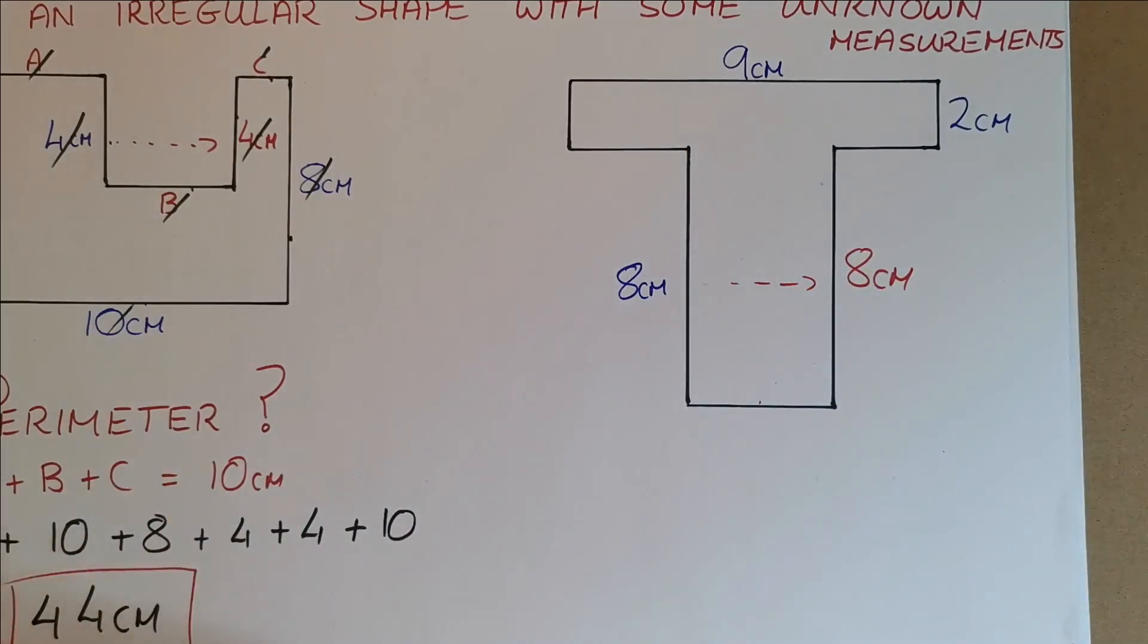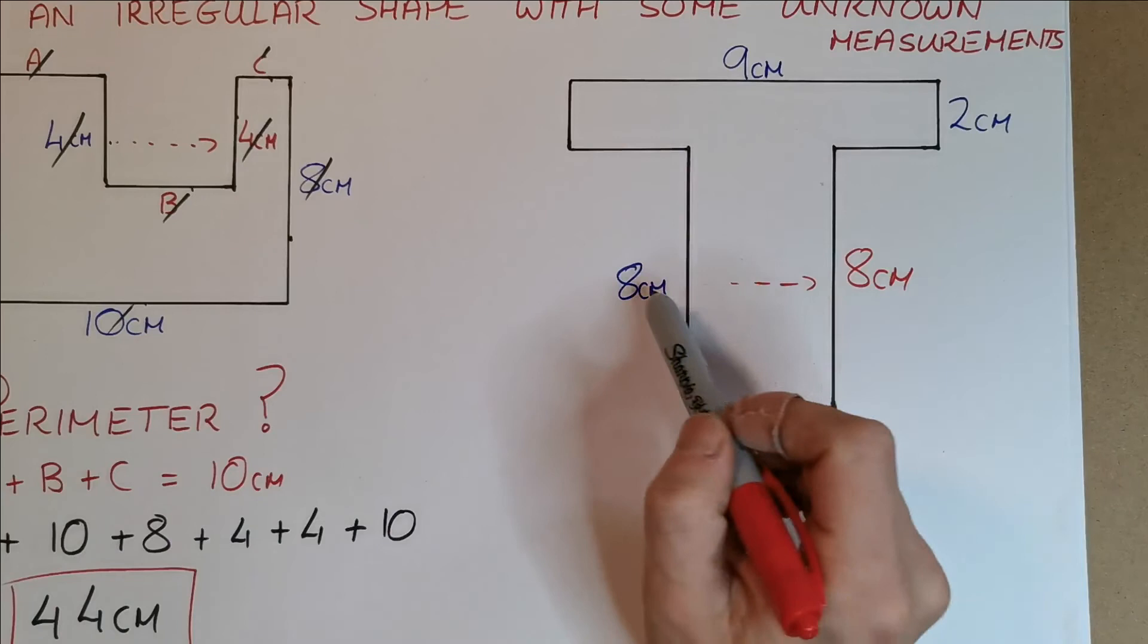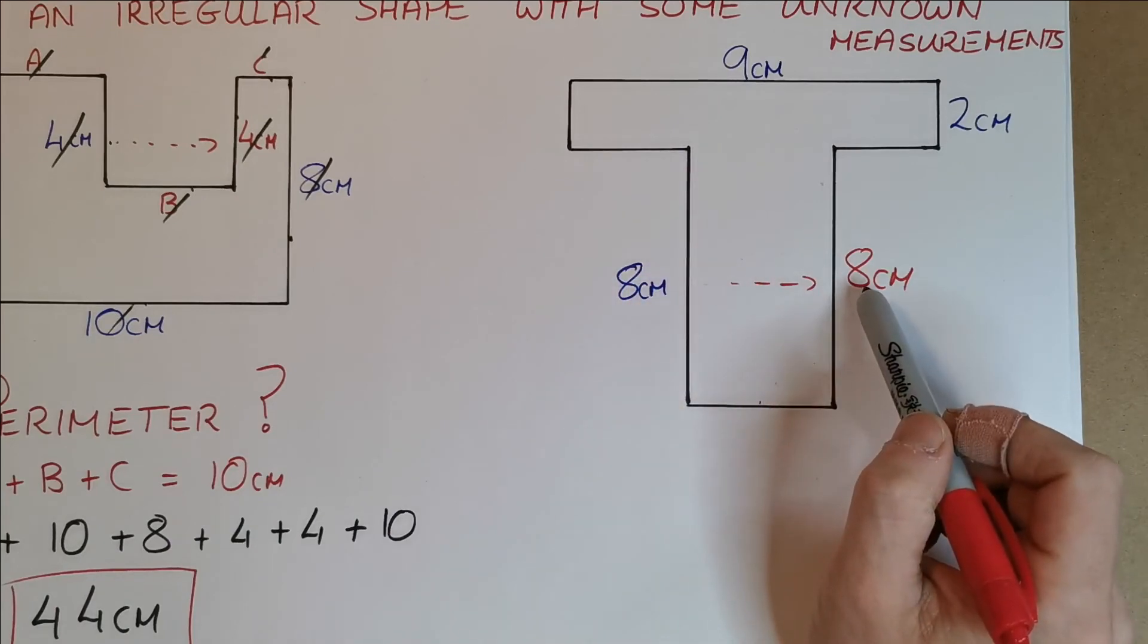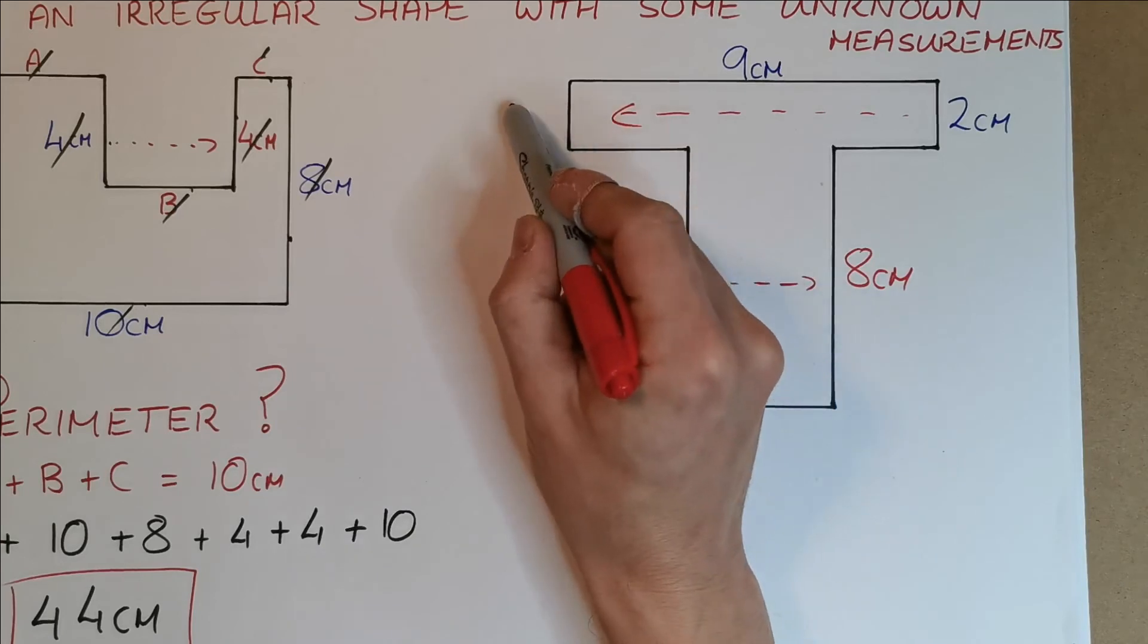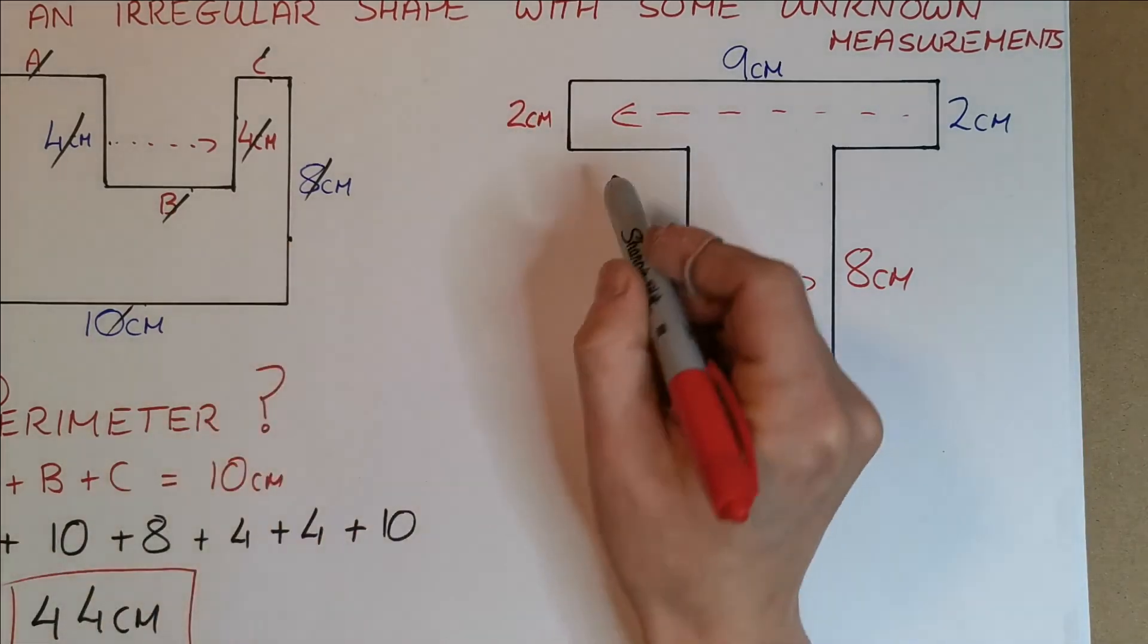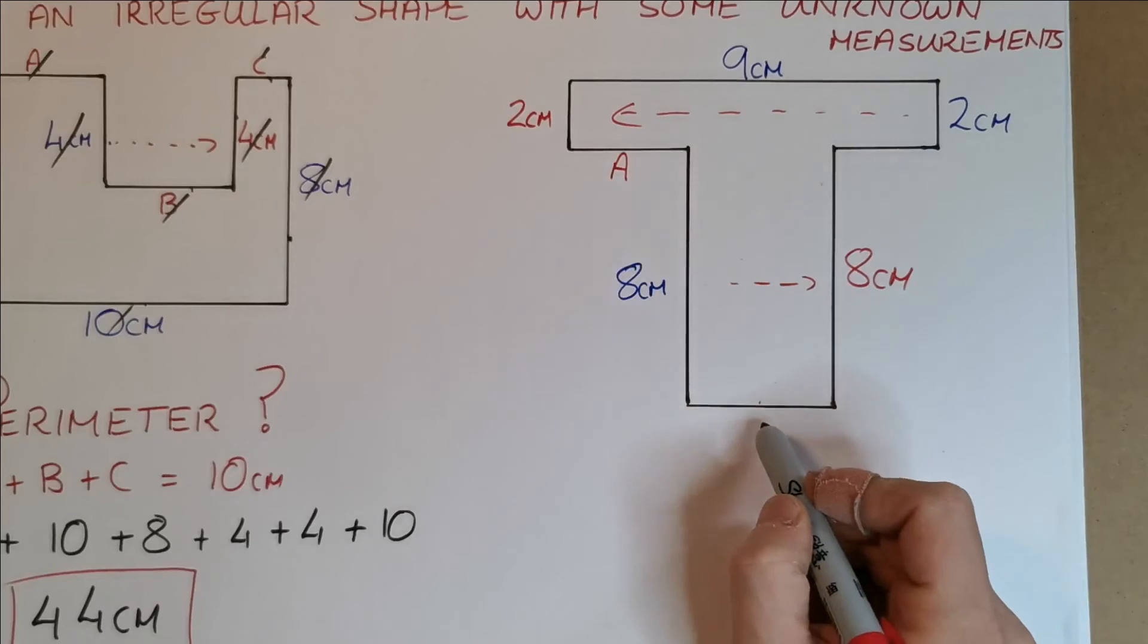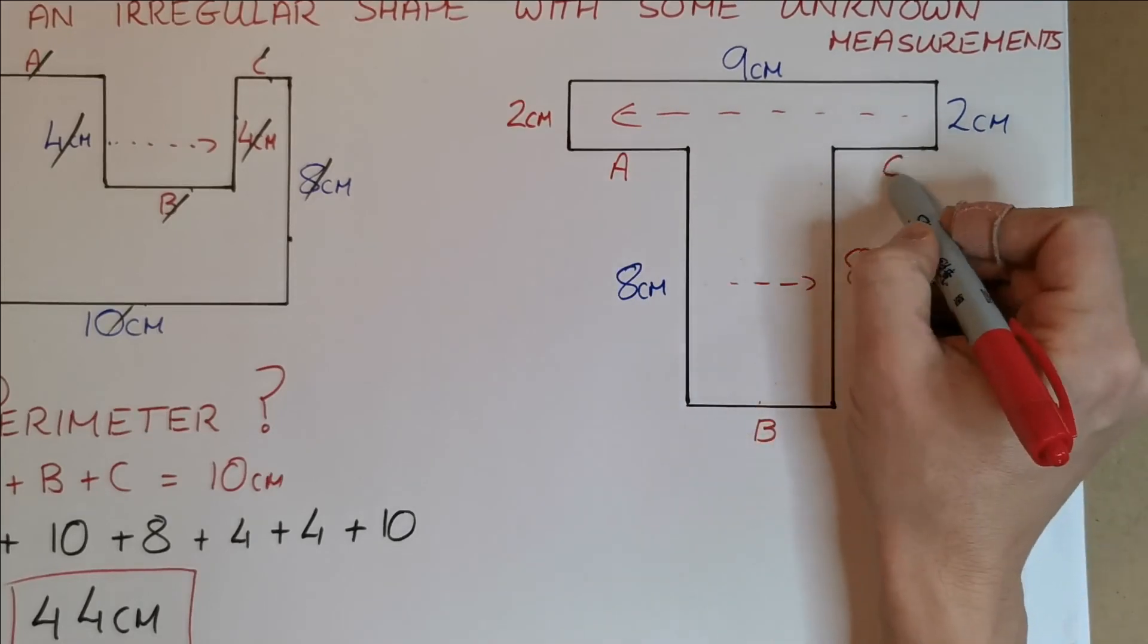So again we have 8 sides here, so I have 9cm here, so this 8 across from here, we can figure out. We can also figure out, looking this way, that this is 2. Now what can't we figure out? We can't figure out this one, we can't figure out this one, and we can't figure out this one.